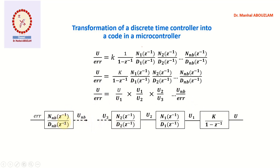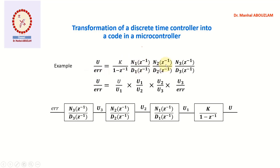With a block diagram it is easier to understand. We start with this block because the information we have from the start is the error. From the error, using this block, we obtain u_mp. We continue: from u3, considering this block, we obtain u2; from u2 we obtain u1. In a concrete example with four blocks, we have intermediate variables u1, u2, and u3.